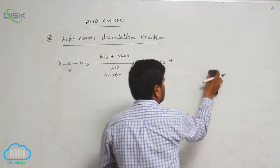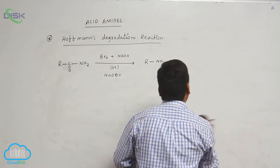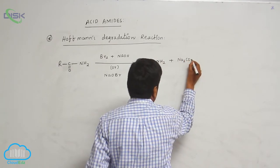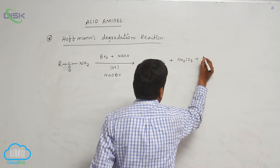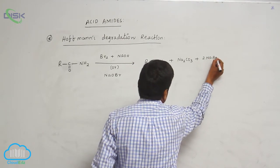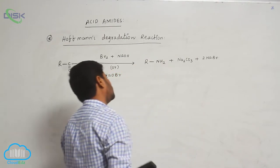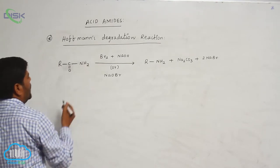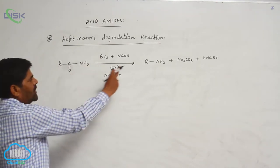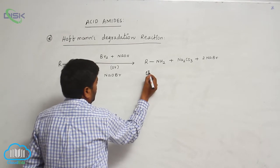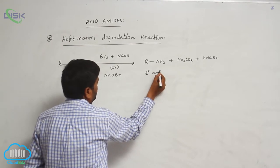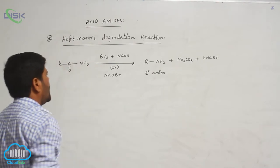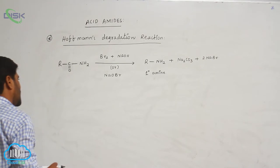The products are Na2CO3 plus 2 moles of sodium bromide. So this particular amide converts into a primary amine in the presence of bromine and a base. This reaction is known as Hofmann's degradation reaction.